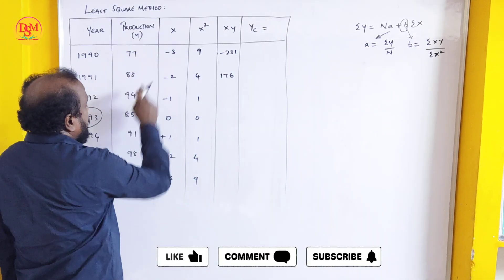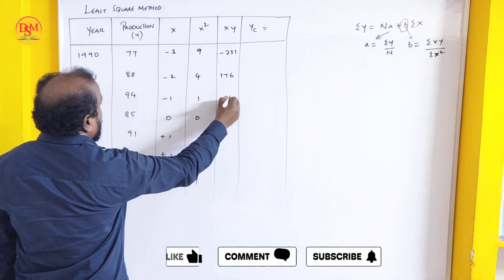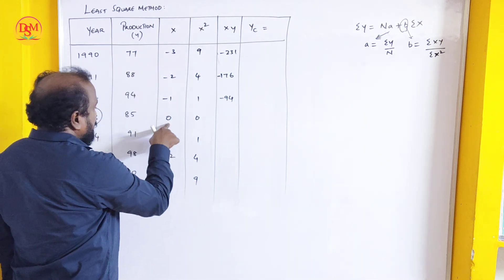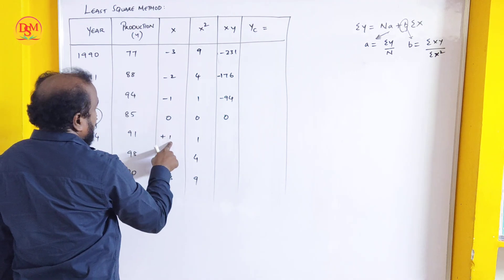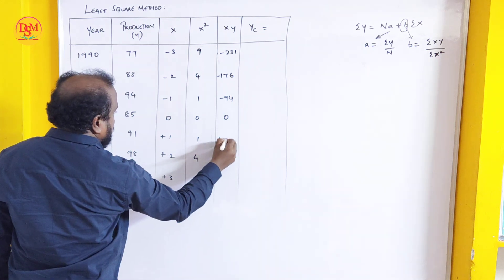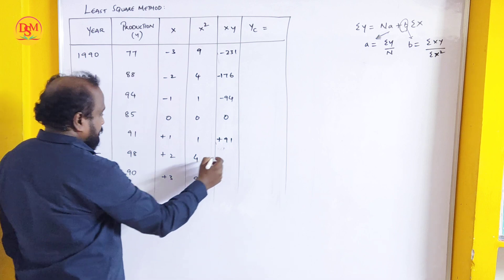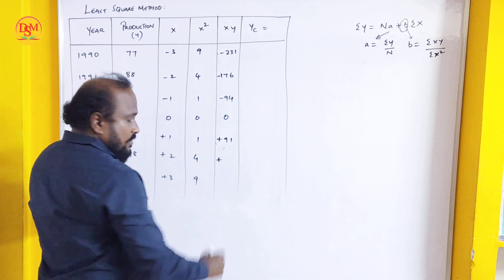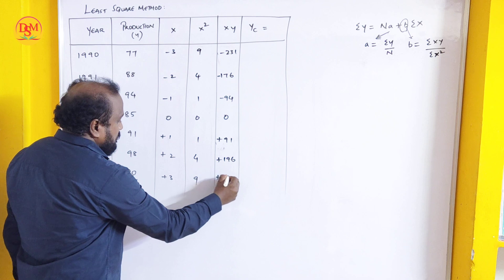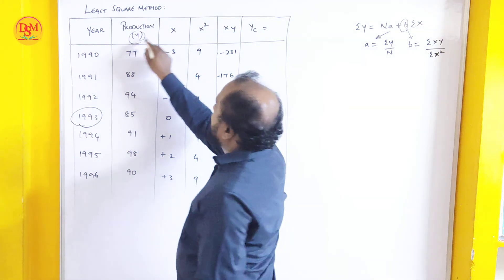Next, what we have to do is multiply x with y. 77 into 3 is 231. Minus 231 is the value. 88 into 2 is 176. Next is 94 into 1, minus 94. 88 into minus 2, minus 176.